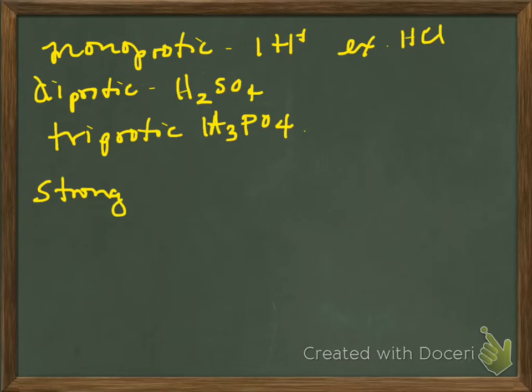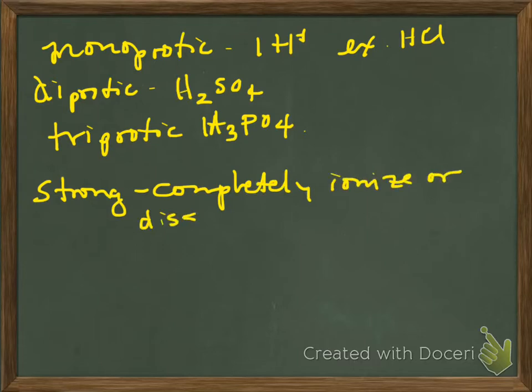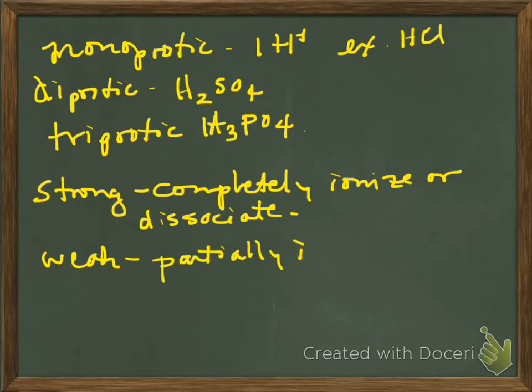A strong acid or base is something that is going to completely ionize or dissociate. And a weak is going to be something that only partially ionizes or dissociates.